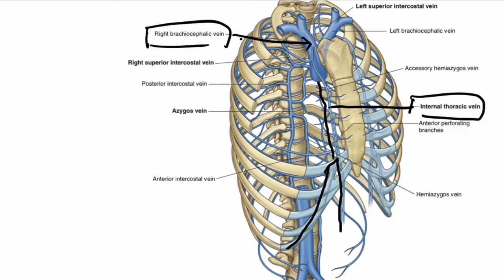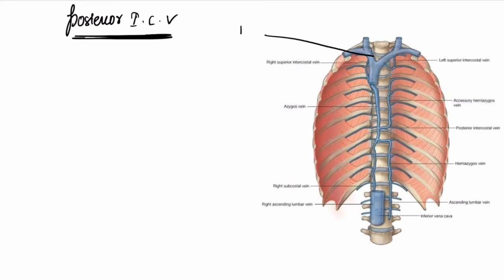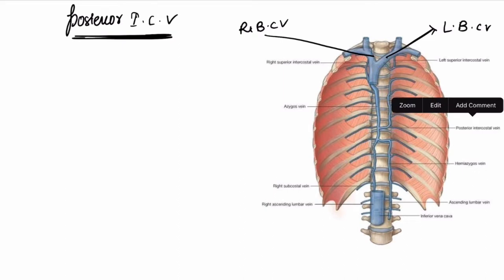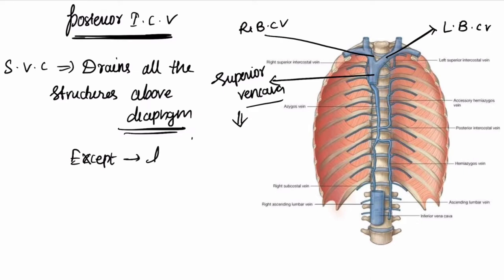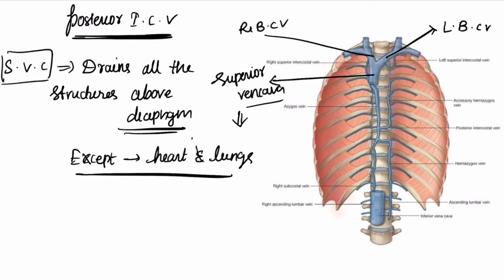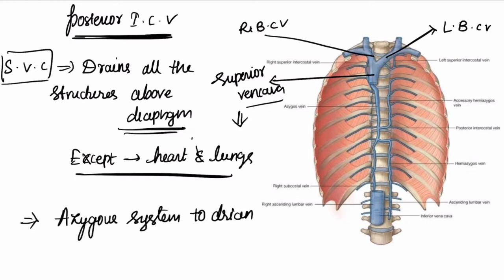Now let us look at the posterior intercostal veins in detail. We have the right brachiocephalic vein and the left brachiocephalic vein. These right and left brachiocephalic veins combine together to form the superior vena cava. The superior vena cava drains all the structures above the diaphragm, except the heart and lungs.